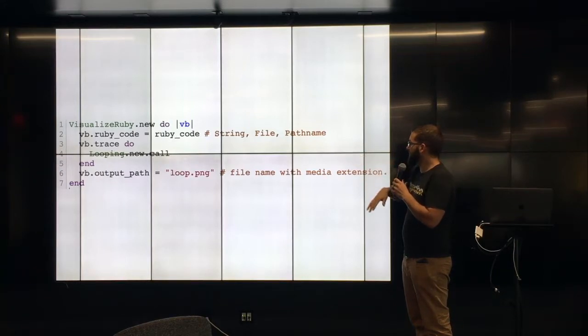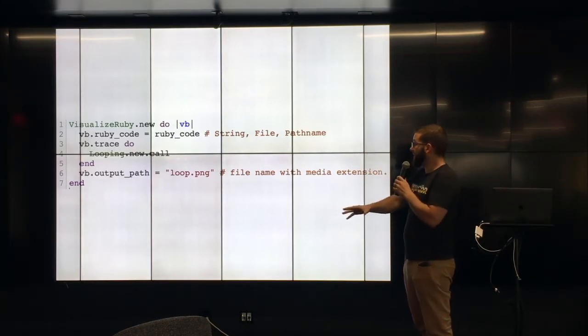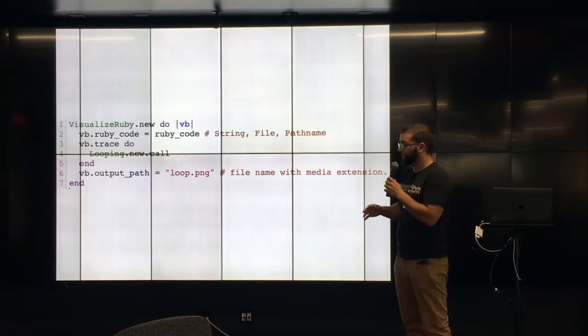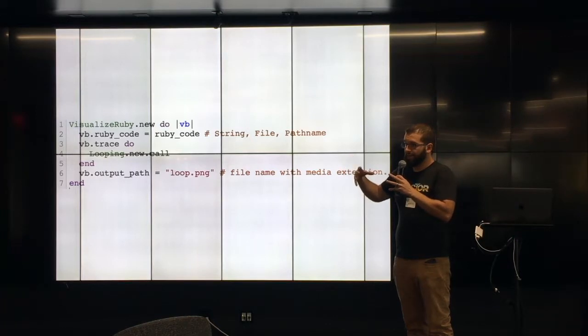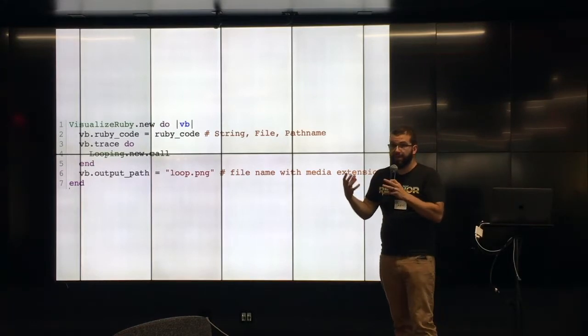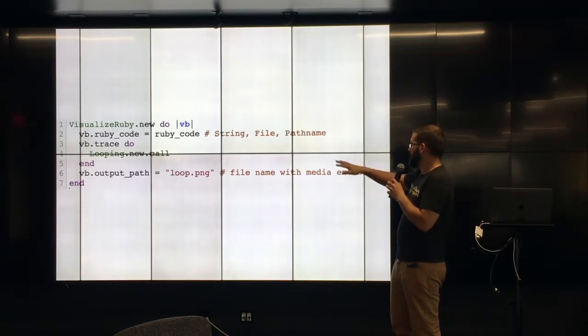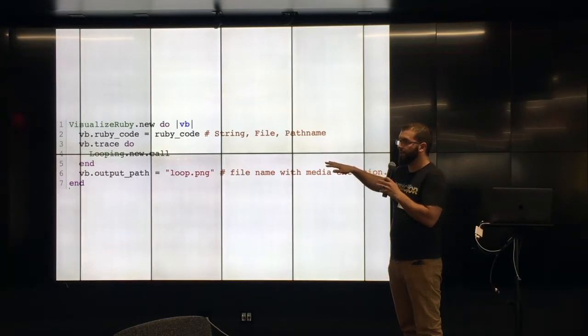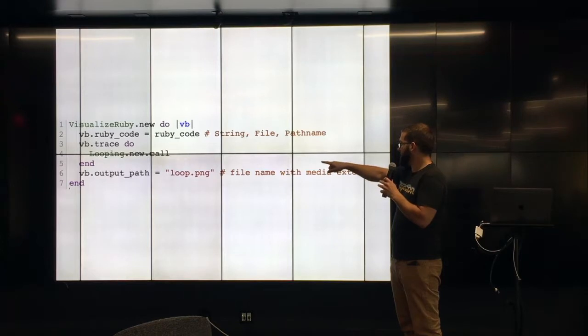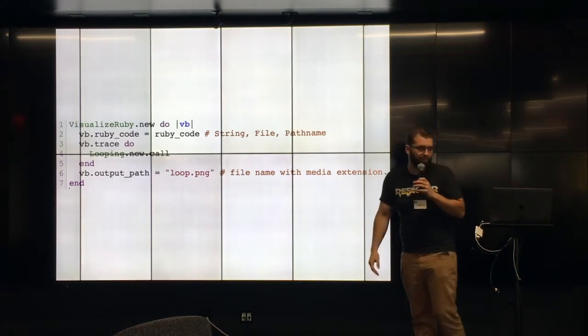Here's just an example of how you would use my gem. So we just kind of open up Visualize Ruby, open up a block. We're passing the Ruby code. It needs to be at the end some type of string we can get to. Either a string of files or a path name or something. Because we have to actually have the isolated context of what we're parsing. So we can throw the string into the parsing gem. But then we have separated out the trace code. So that's what we're actually calling the code that you're introspecting. Here we're just going looping new and we're going to call that method. And then finally there's the output path. This is the implementation of the GraphViz wrapper library I'm using.